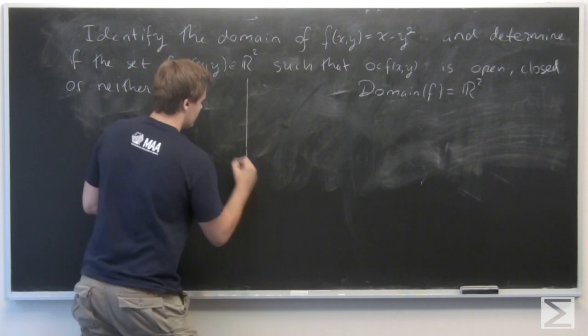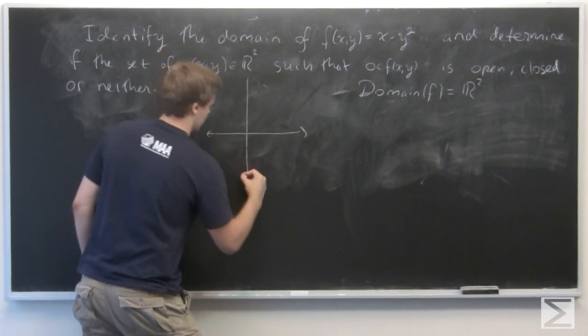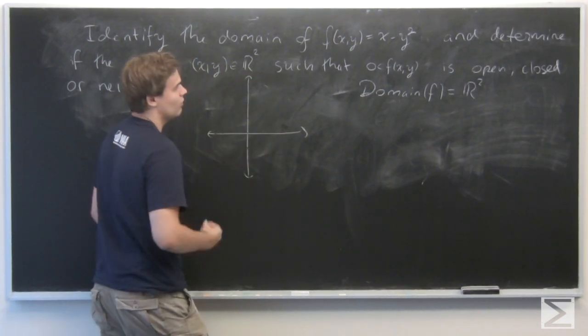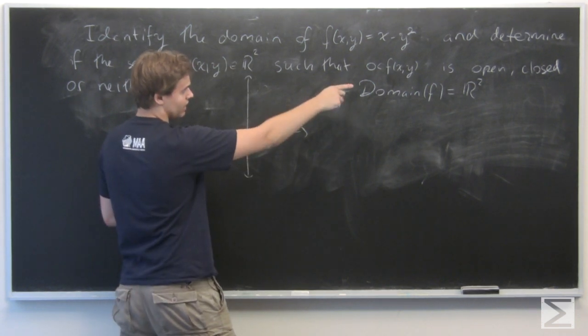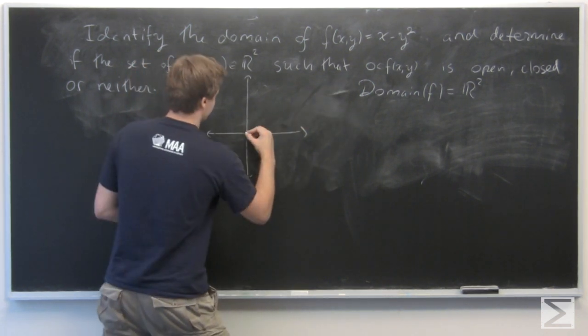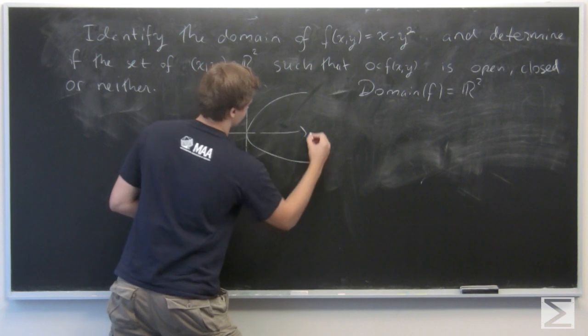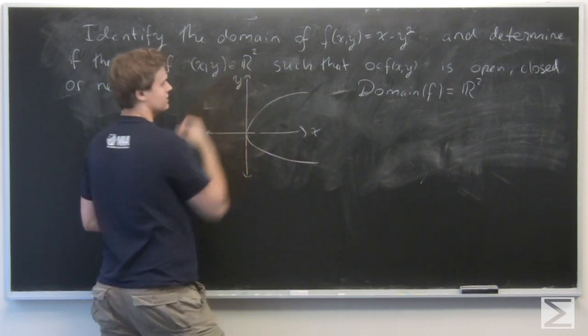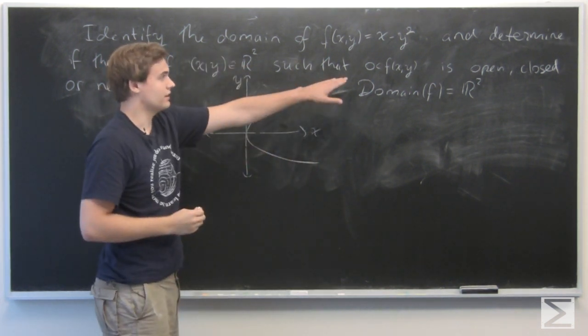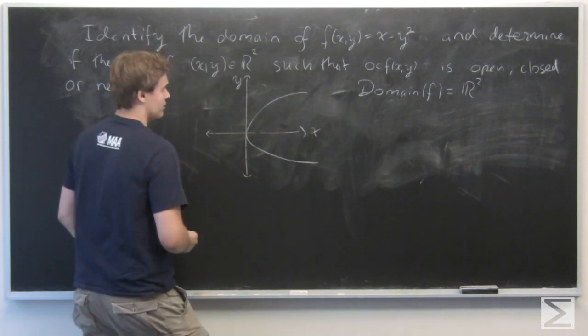So first note that geometrically, when f of xy equals 0, we get this parabola opening up to the right, where this is the x-axis and this is the y-axis. So that the set of points satisfying this inequality are just going to be these.